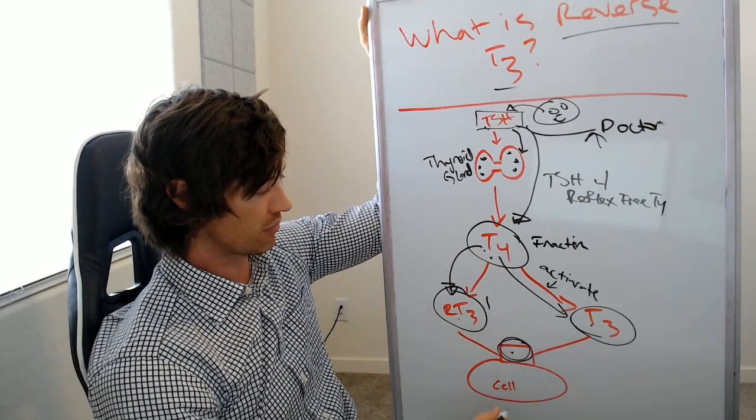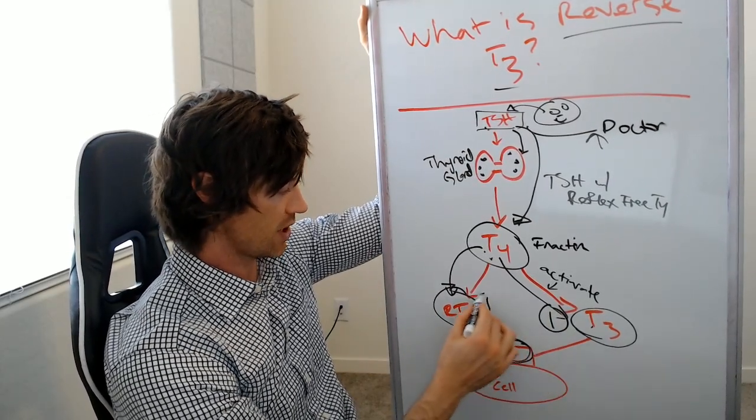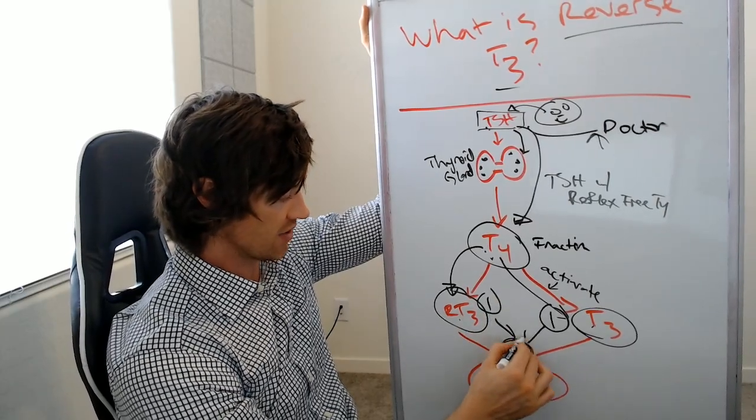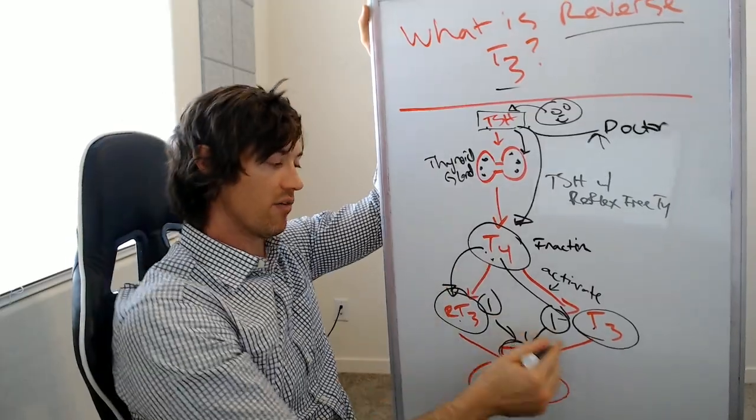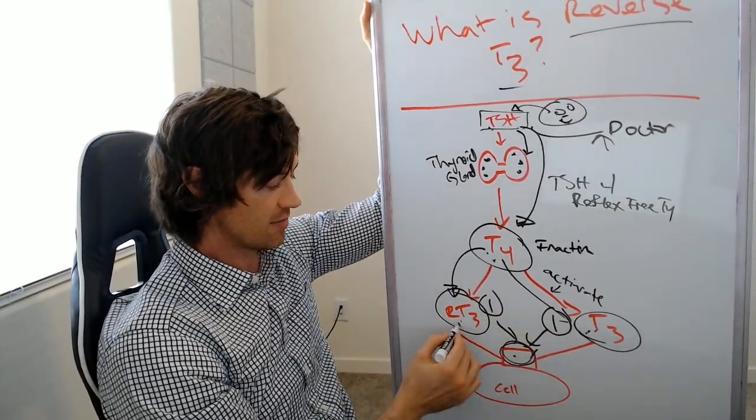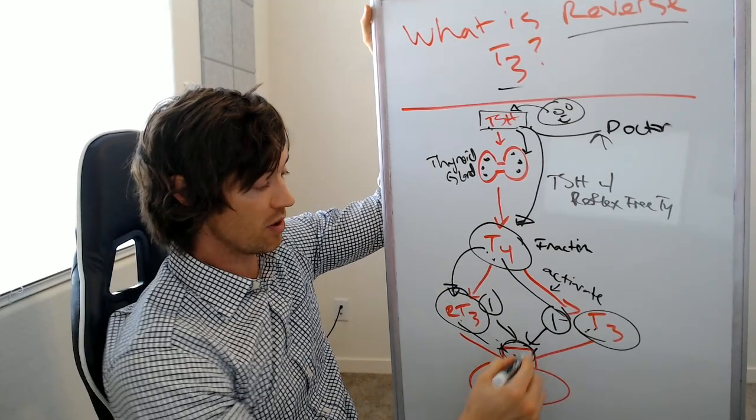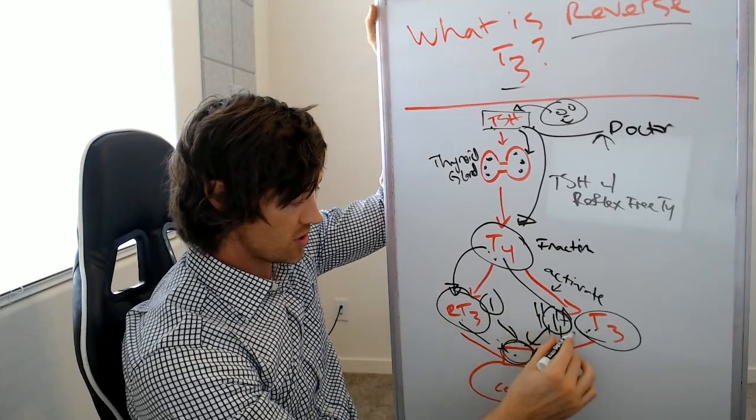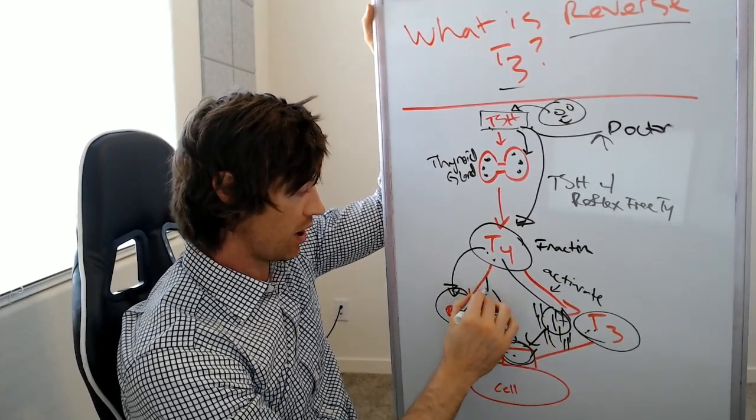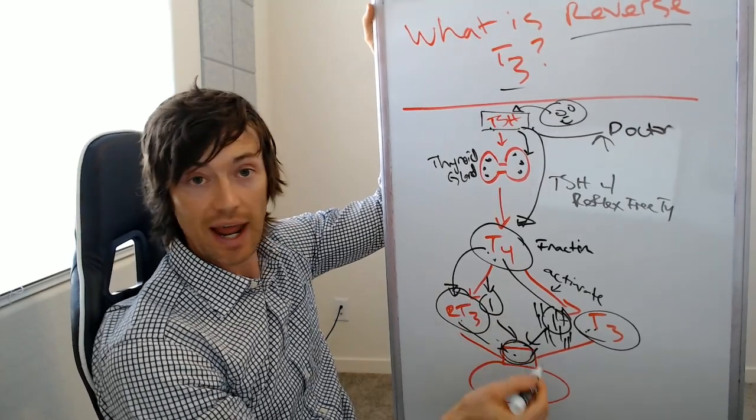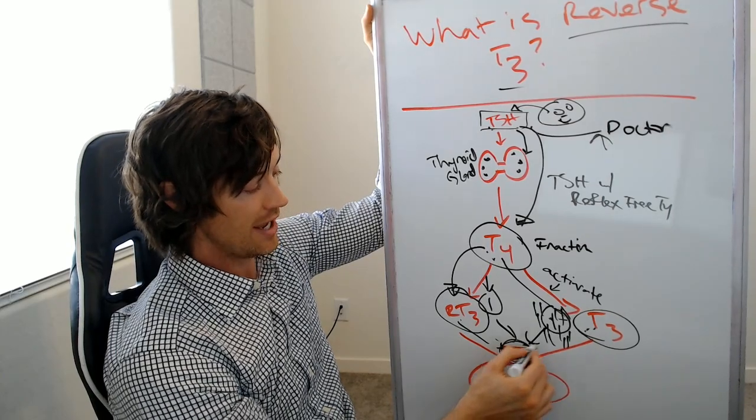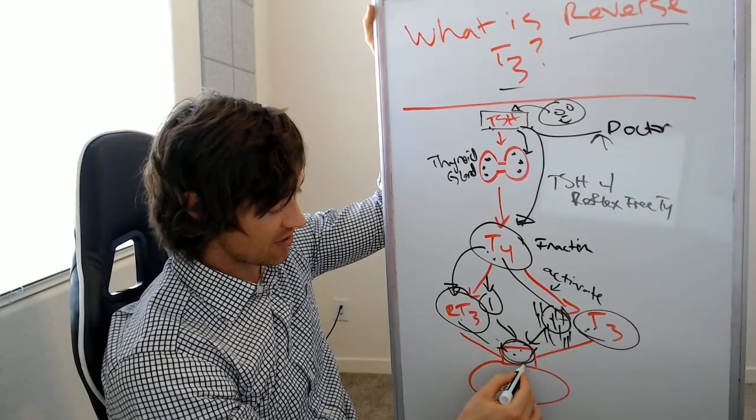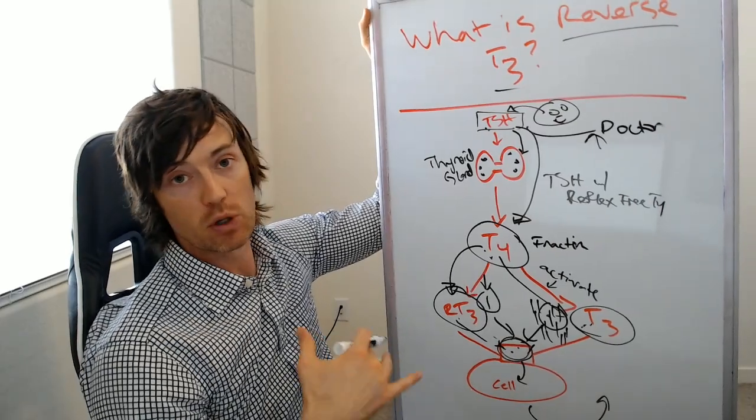So if there's one molecule of reverse T3 and one molecule of T3, they are both going to try and get on the same place and they're going to compete, which means that sometimes the cell is going to be turned on whenever this one's on top of the receptor. And sometimes it's going to be turned off whenever this one is. So you want there to be way more T3 in your body and as small amount of reverse T3 as possible.